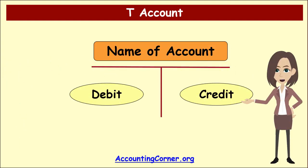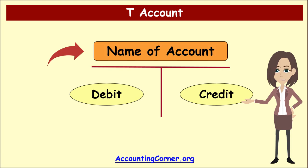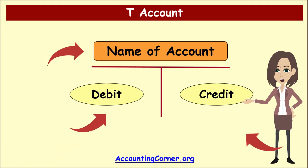Each general ledger account is presented in the T-Form. Each account has a name and two sides. The left side is the debit side, and the right side is the credit side.